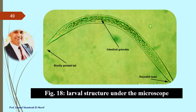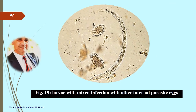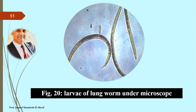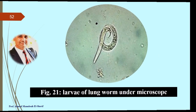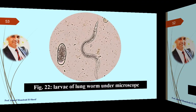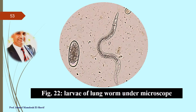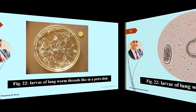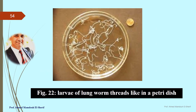Larval structure under the microscope: a rounded head is clear, intestinal granules are present, and a pointed tail is noted. Microscopic fields show mixed infection with Paramphistomum eggs and larval stages of lung worms. Larvae of lung worms appear thread-like in a Petri dish in the laboratory.